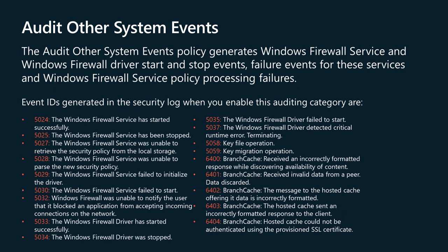The Audit Other System Events policy generates Windows Firewall Service and Windows Firewall Driver start and stop events, failure events for these services, and Windows Firewall Service policy processing failures. Audit Other System Events determines whether the operating system audits various system events. The system events in this category include: startup and shutdown of the Windows Firewall Service and Driver; security policy processing by the Windows Firewall Service; cryptography key file and migration operations; and Branch Cache events.